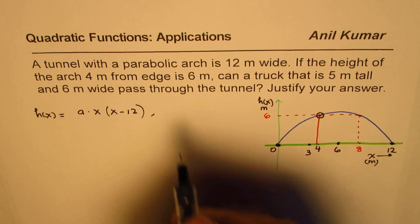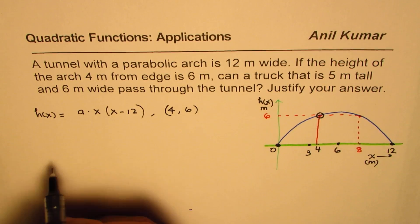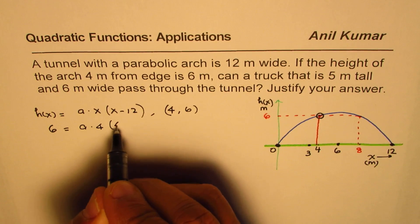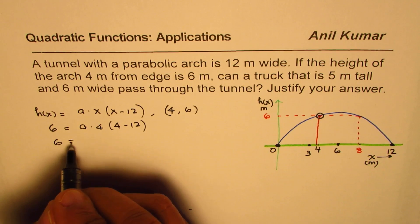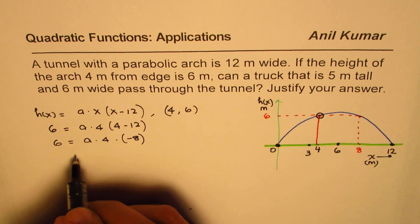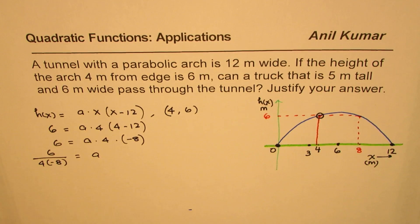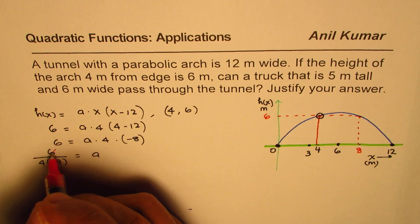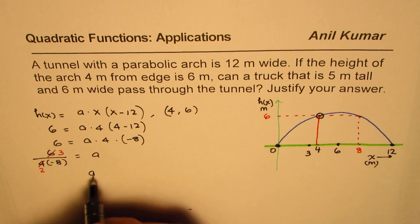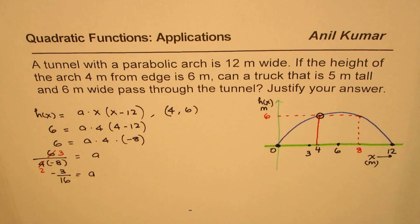To find the value of a, we can use this point that at 4 distance away from the edge, height is 6. So (4, 6) is the point which we can use here. 6 is the value of height, x is 4 for us. So we get 6 equals a times 4 times (4 minus 12). So 6 equals a times 4 times minus 8. And therefore, a is equal to 6 divided by 4 times minus 8. Now we can simplify this a bit. Dividing 6 by 2, we get 3 and that is 2. And that gives us the value of a as equal to minus 3 over 16.